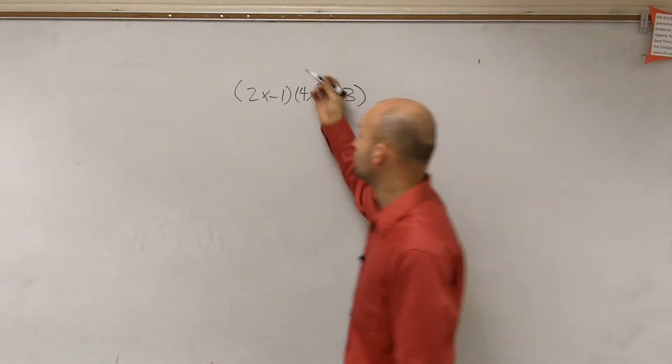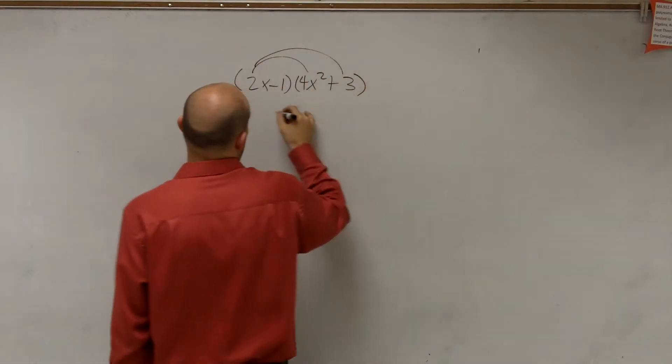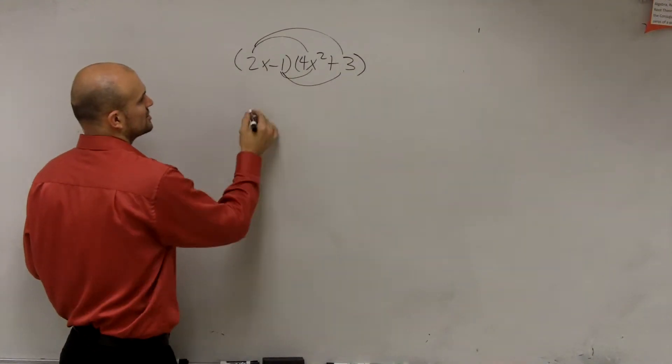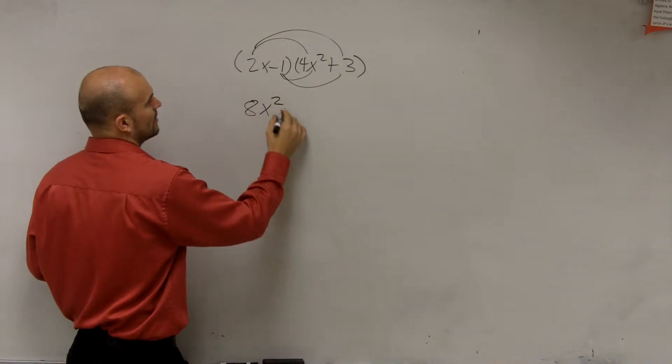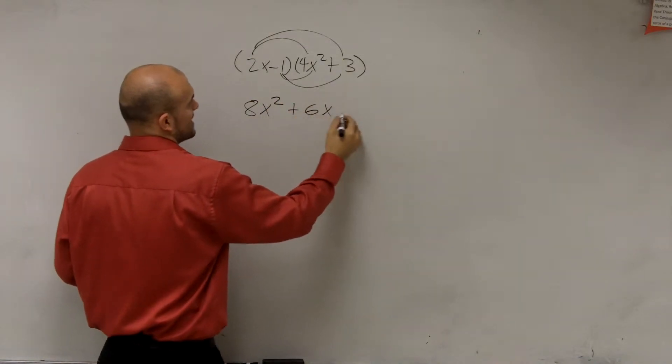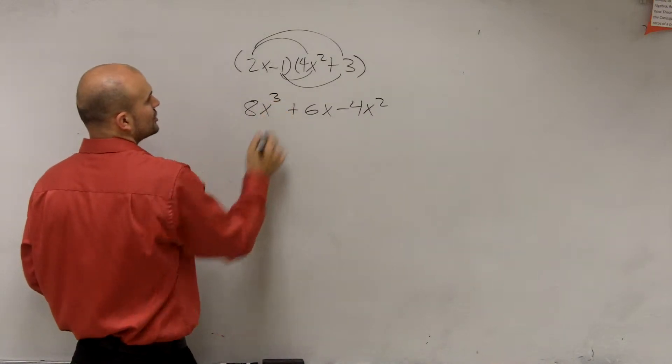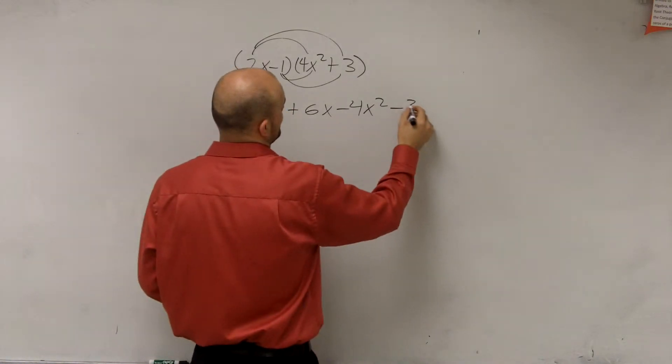So we have multiplying binomials. We can just apply our FOIL or distributive property, however you want to work through it. So I'll just do this quickly. I'll have 8x squared plus 6x - sorry, that's 8x cubed plus 6x minus 4x squared minus 3.